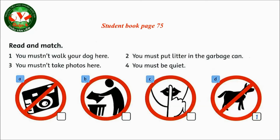To better understand must and mustn't, let's do two small exercises. Now open your student book page 75 — read and match. Number 1: 'You mustn't walk your dog here' matches with picture D. Number 2: 'You must put litter in the garbage can' matches with picture B. Number 3: 'You mustn't take photos here' matches with picture A. Number 4: 'You must be quiet' matches with picture C.